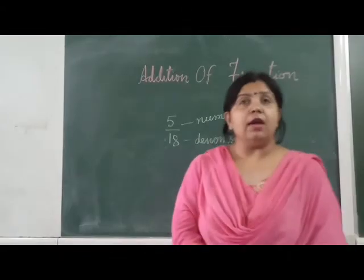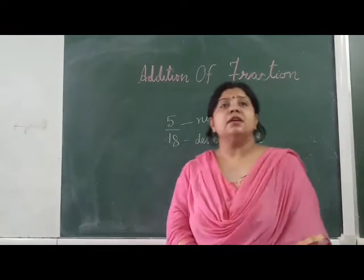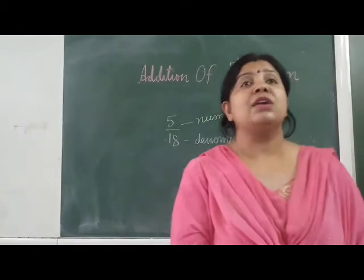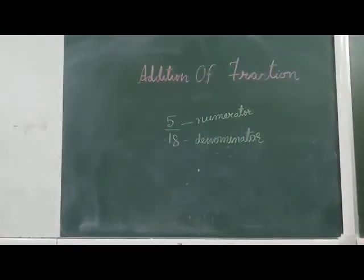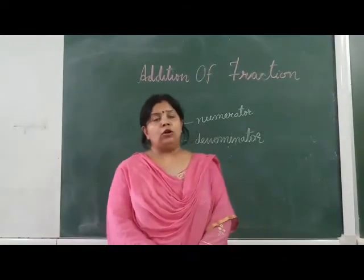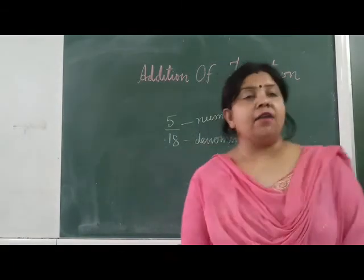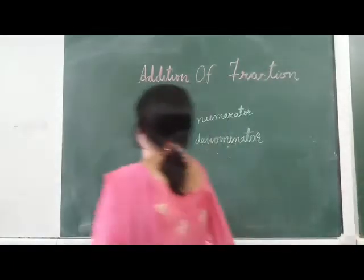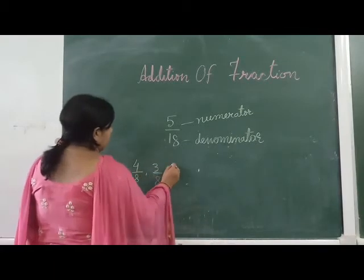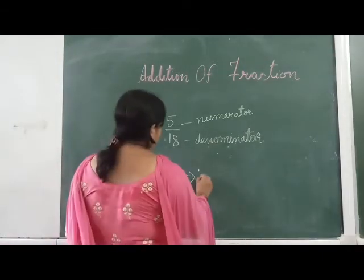Now we will talk about the different types of fractions. First is like fractions. When two or more fractions have the same denominator, they are called like fractions. Like four by eight, three by eight, five by eight — these are called like fractions.